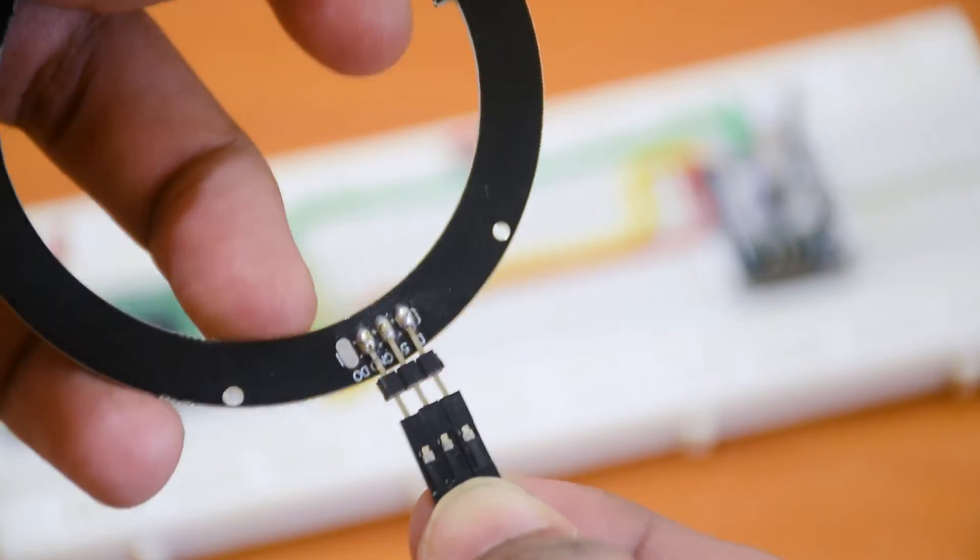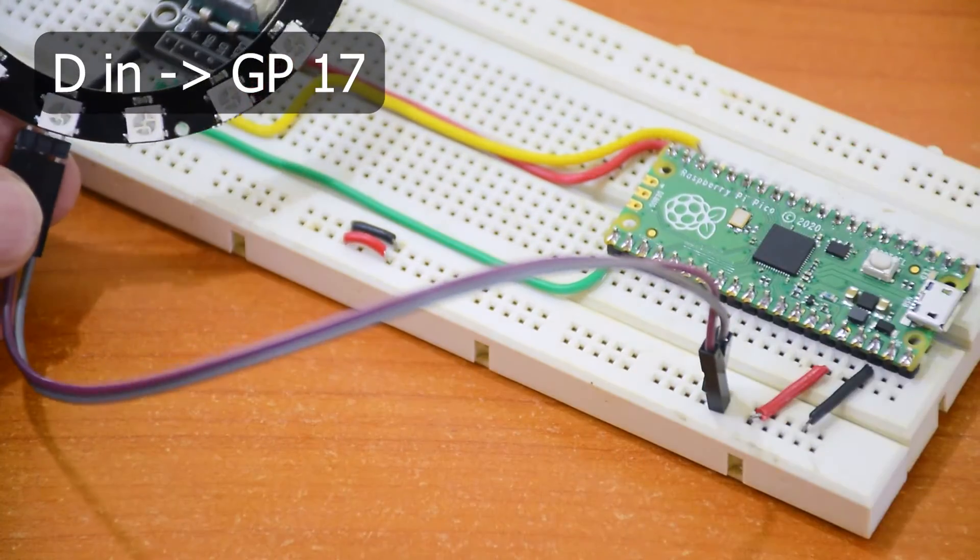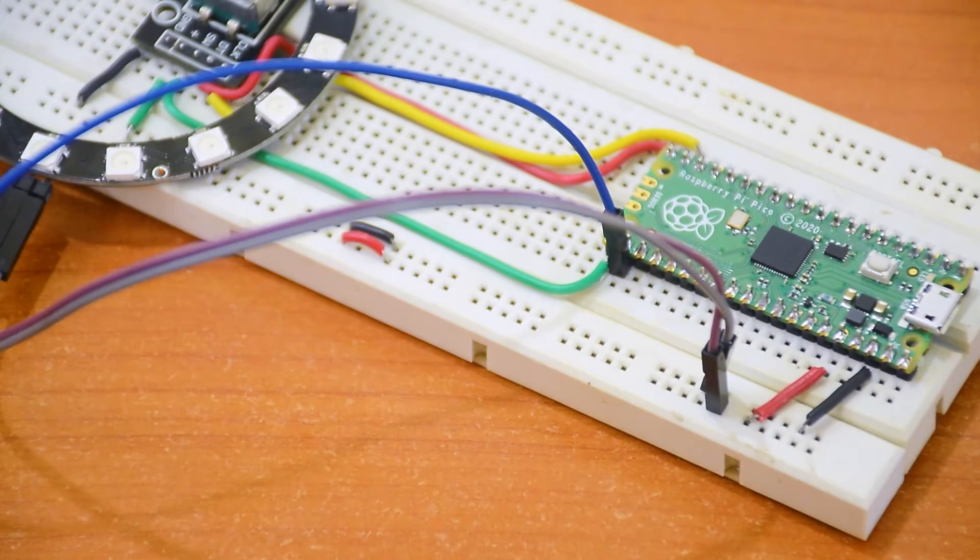Now for the LED ring, connect the power and then the data pin to GP17. Connection guide is linked in the description.